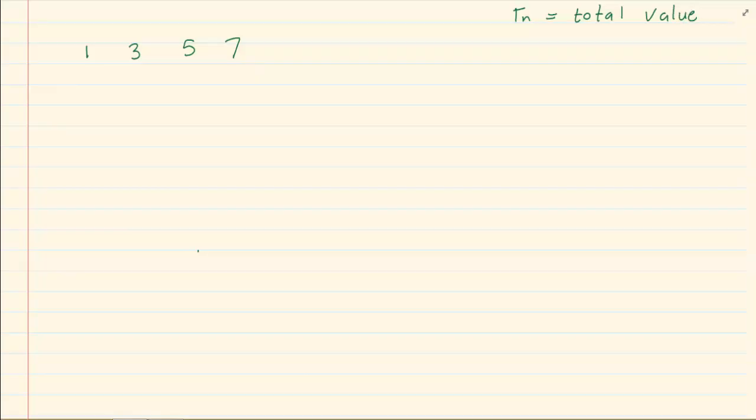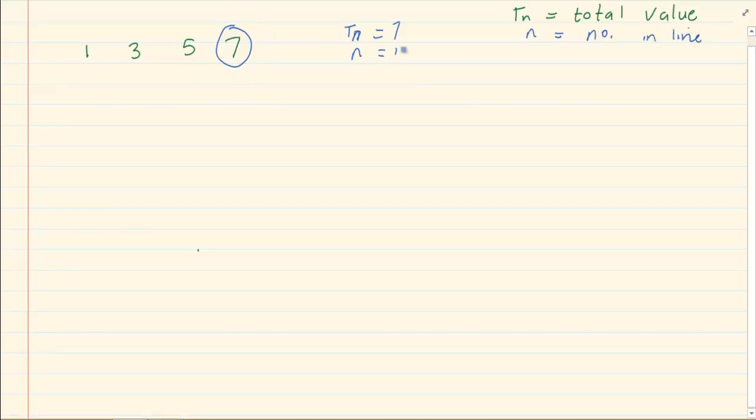So when I mention that term 4 is equal to 7, then tn is equal to 7. And n, which is the number in line, in this case 4.